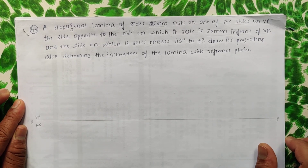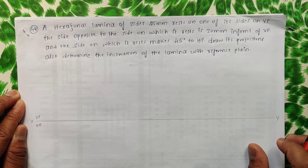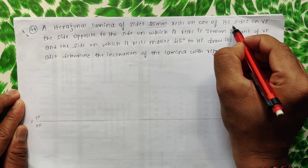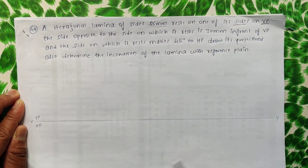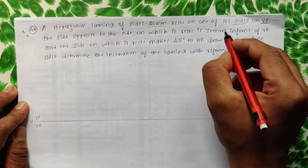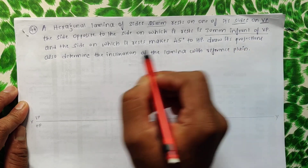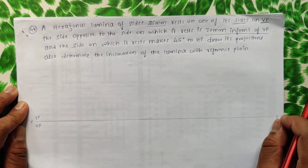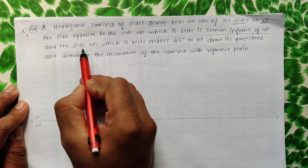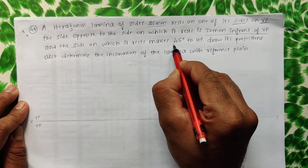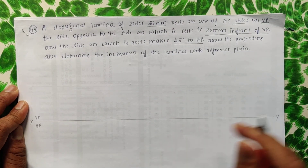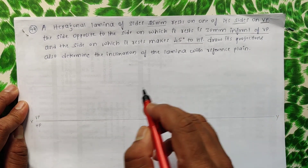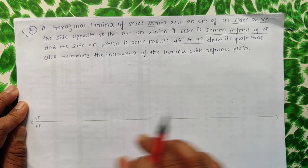Here is one more problem on hexagonal lamina. A hexagonal lamina of sides 25mm rests on one of its sides on VP. The side opposite to the side on which it rests is 30mm in front of VP. The side on which it rests makes 45 degrees to HP. Draw its projections and also determine the inclination of the lamina with the reference plane.